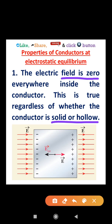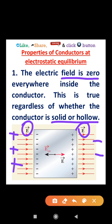The electric field inside the conductor becomes zero. When an external electric field is applied, the free electrons experience a force. The electric field is produced by positive charges and it moves towards the negative charges. When a conductor is placed in this electric field, there are a large number of free electrons moving randomly in the absence of the field.